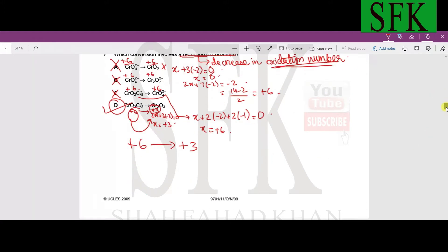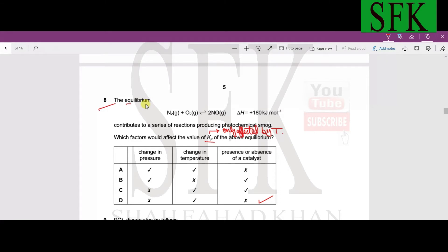Now let's move on to the next MCQ, MCQ number eight. The equilibrium is given over here, the enthalpy change is given, contributes to a series of reactors during the photochemical smog. Then which factors would affect the Kp of the above equilibrium?